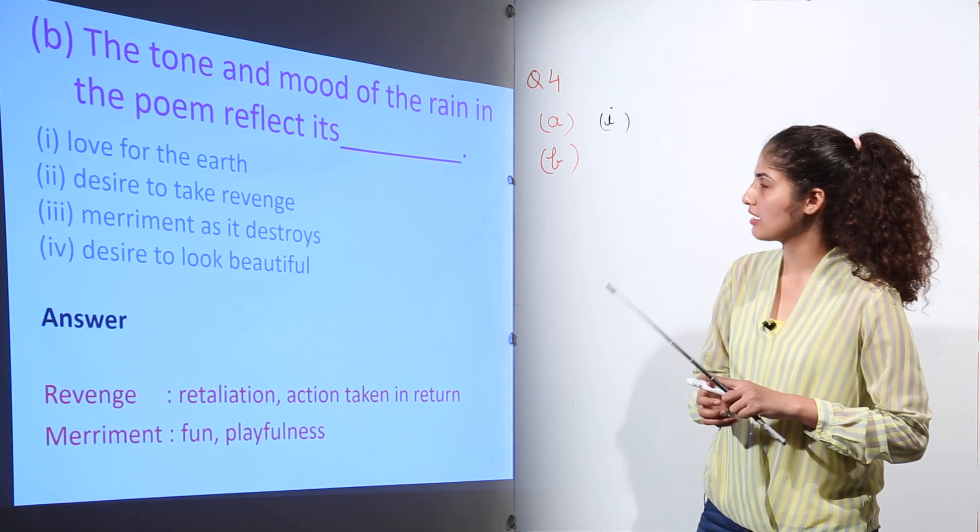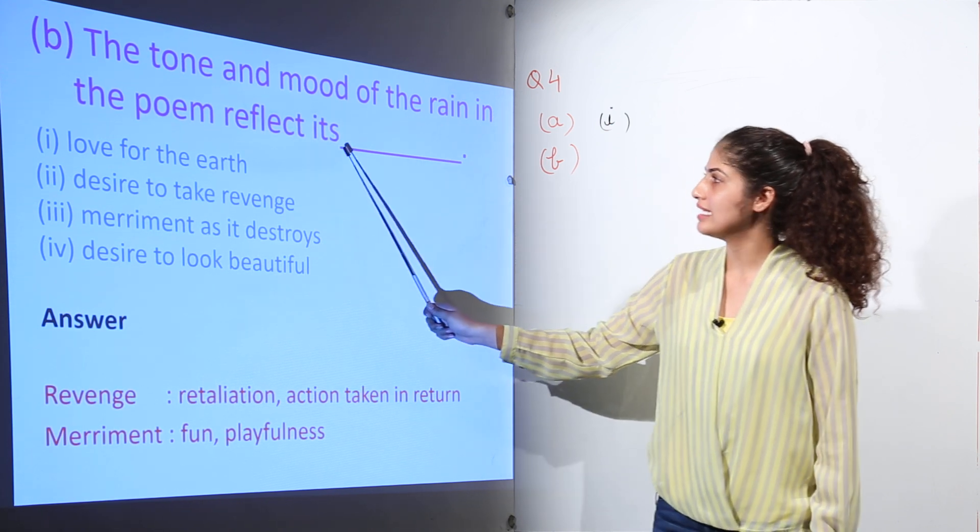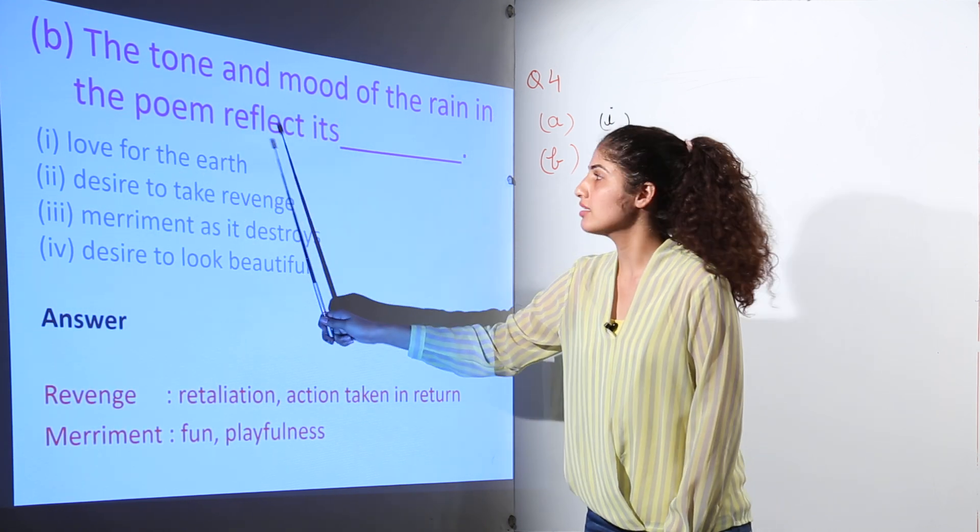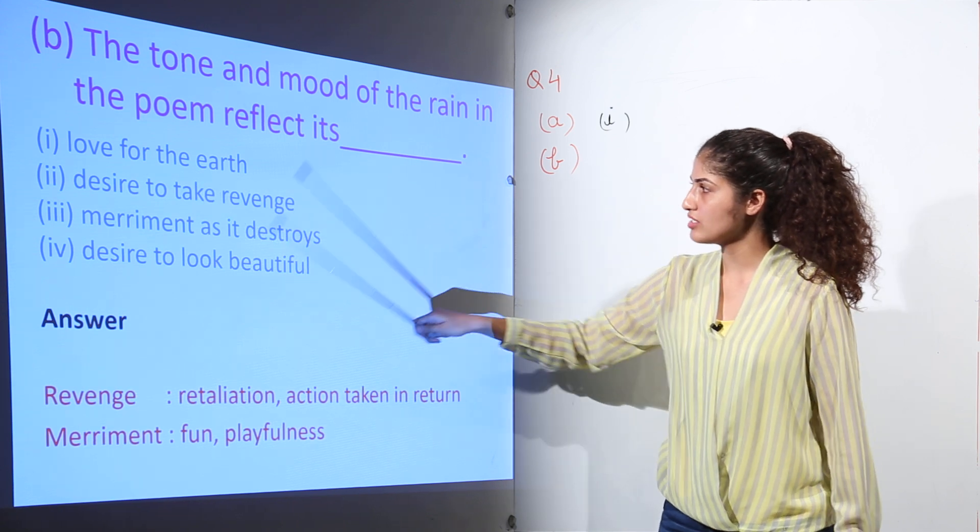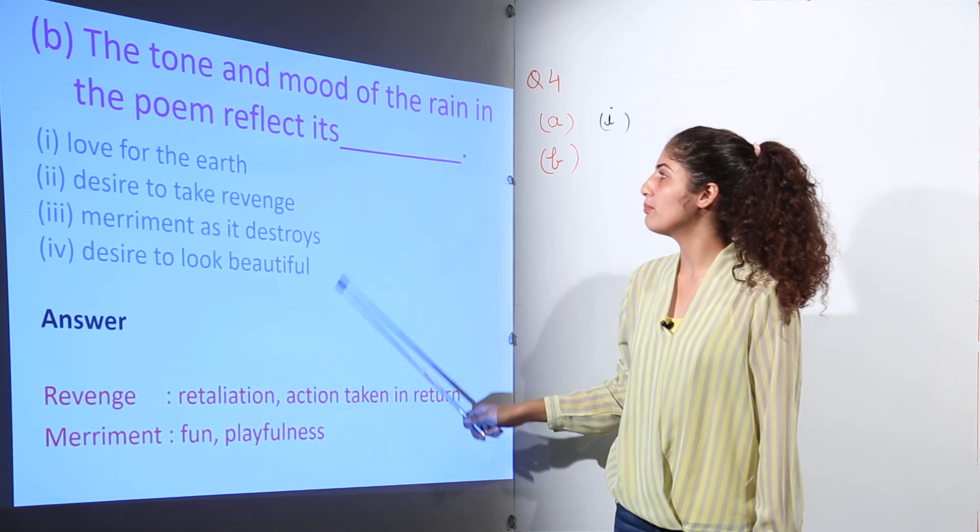Question two, part B: The tone and mood of the rain in the poem reflects its love for the earth, desire to take revenge, merriment as it destroys, or desire to look beautiful.